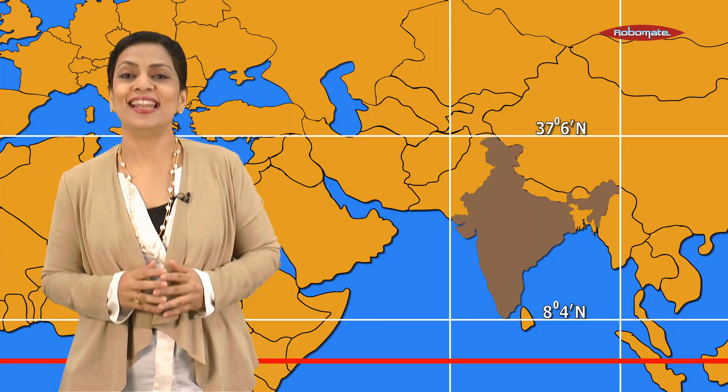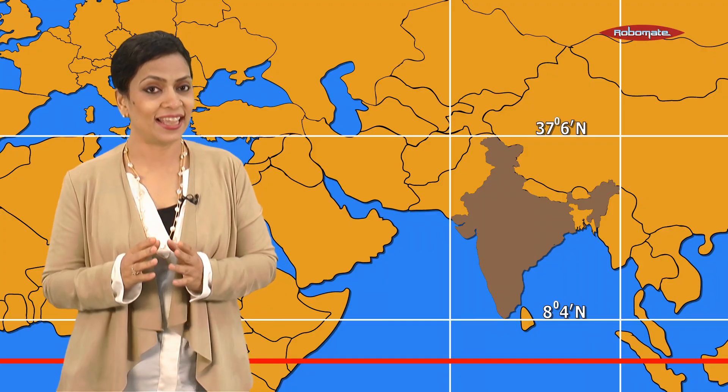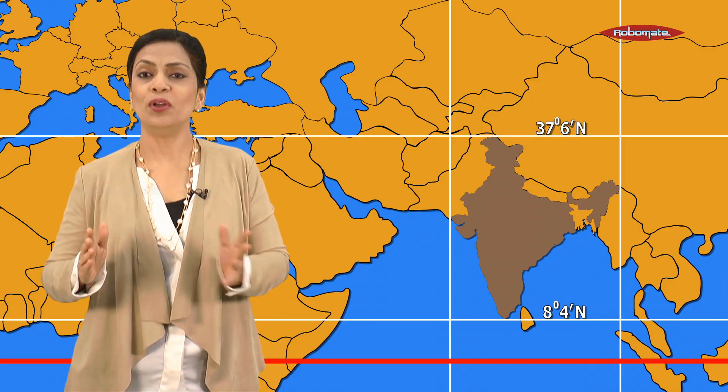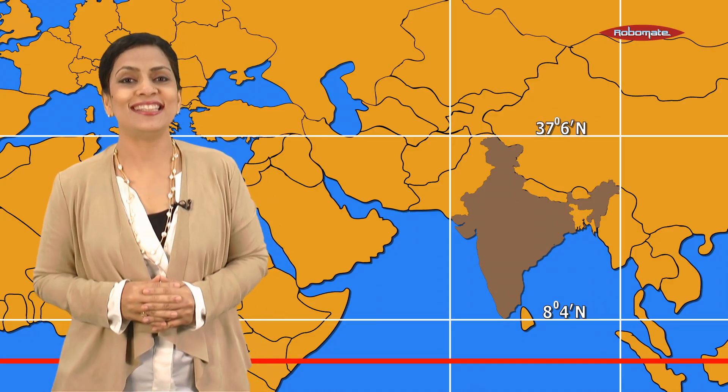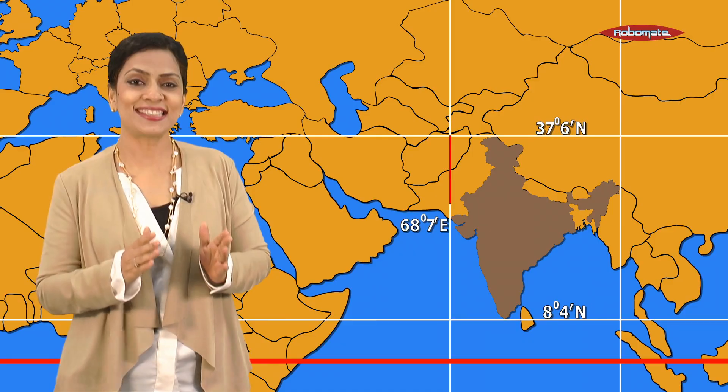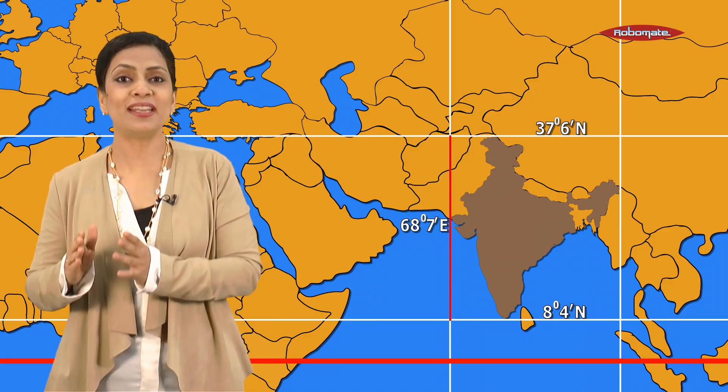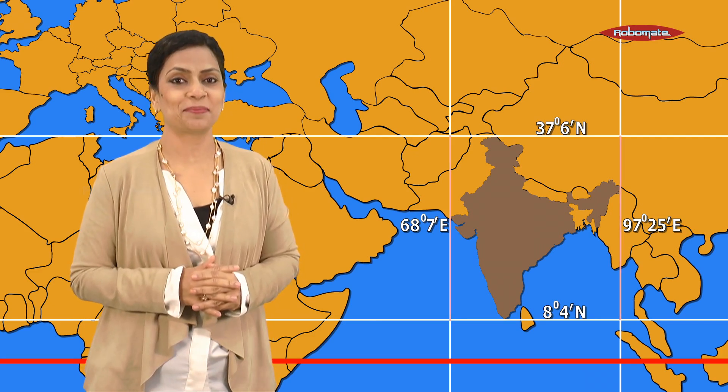Similarly, the northern tip of India lies at 37 degrees 6 minutes north. When it comes to longitudinal extent, it is 68 degrees 7 minutes east and 97 degrees 25 minutes east. The latitudinal and longitudinal extent of the mainland is about 30 degrees.